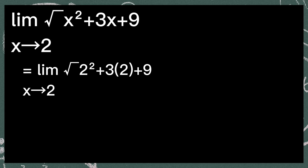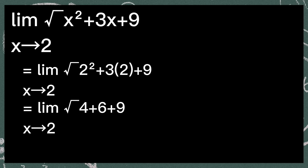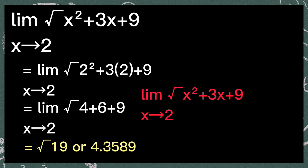Next, the limit of the square root of x squared plus 3x plus 9, as x approaches 2. First, substitute the value of x which is 2. So it will be the limit of the square root of 2 squared plus 3 times 2 plus 9, as x approaches 2. 2 squared is equal to 4, and 3 times 2 is equal to 6. So the square root of 4 plus 6 plus 9 is equal to the square root of 19 or 4.3589. So the limit of the square root of x squared plus 3x plus 9, as x approaches 2, is equal to the square root of 19 or 4.3589.